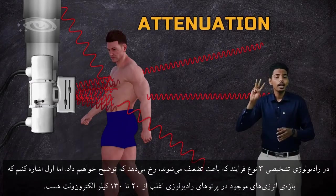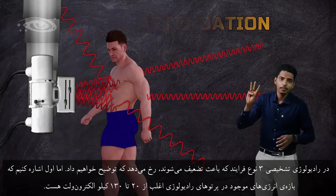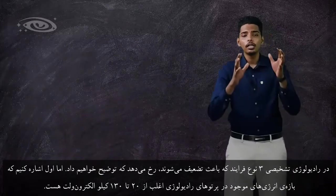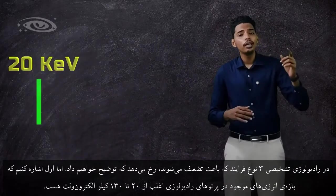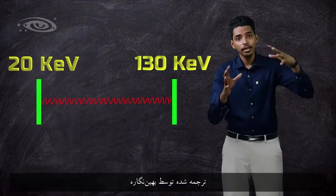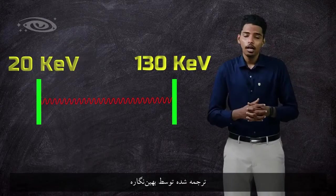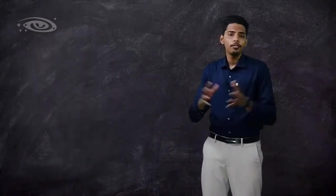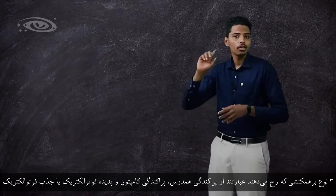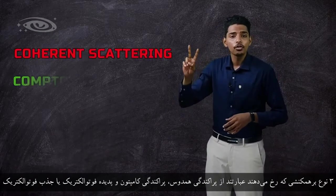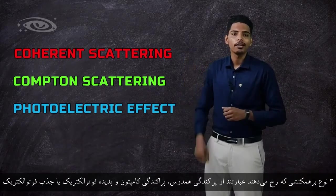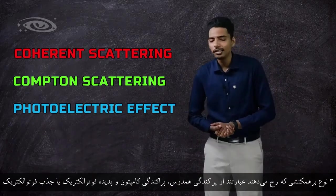In diagnostic radiology, three attenuation processes happen. The diagnostic radiology energy range starts from 20 keV to 130 keV — within this range these interactions occur in matter. The three interactions are: number one, Cochrane scattering; number two, Compton scattering; and number three, photoelectric effect or photoelectric absorption. We'll see those interactions in detail.